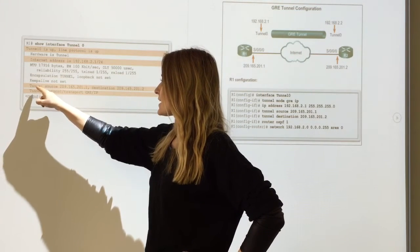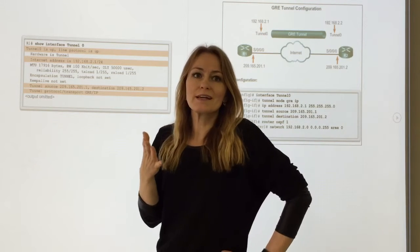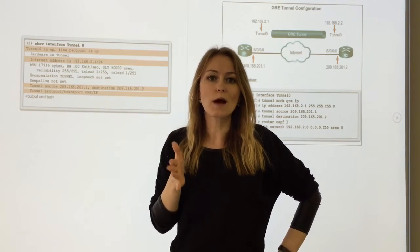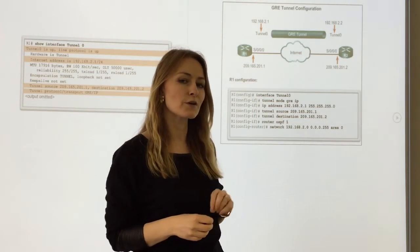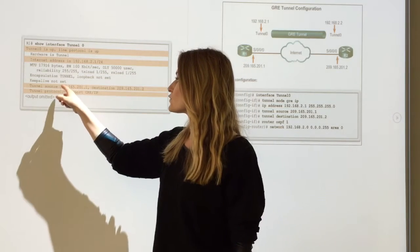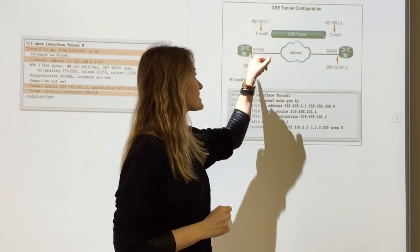It says down here tunnel source—that's the source address of the router. The tunnel source is the S0/0/0 interface of R1, 209.165.201.1. That's this address here.